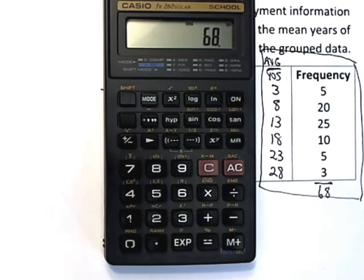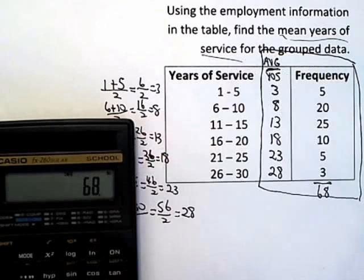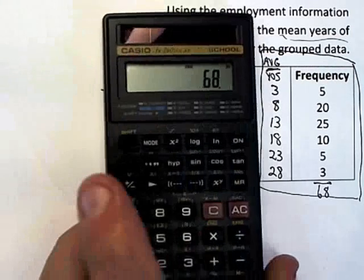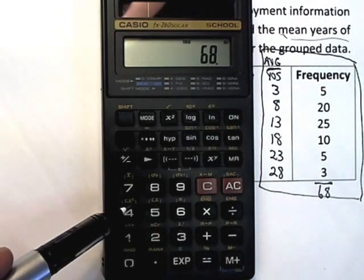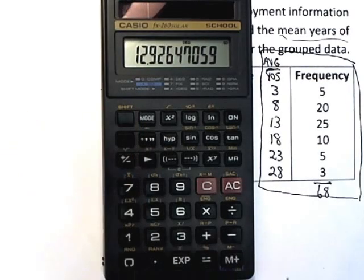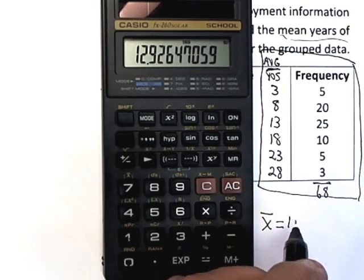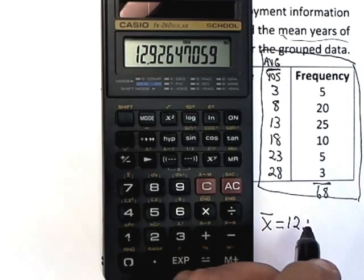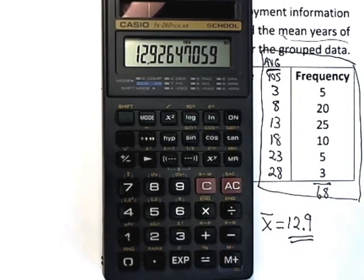Now that I feel confident I've got all sixty-eight numbers in there, to find the mean years of service I go to the calculator. X-bar is the mean and it's above the seven key. So I do Shift+7 and that tells me the mean of this group data is approximately twelve point nine — rounded to the nearest tenth. You just have to listen to the problem as to how the answer should be rounded.